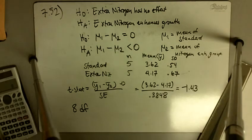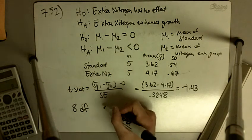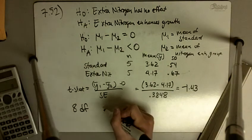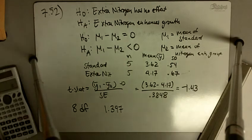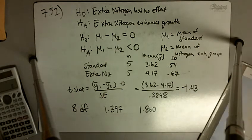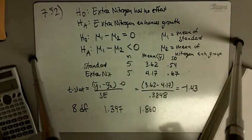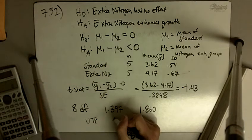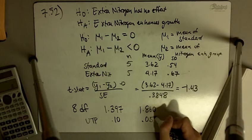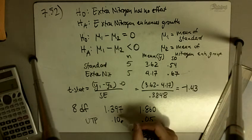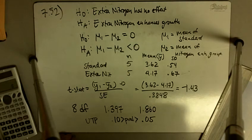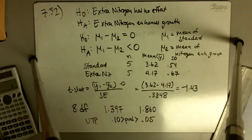We see that 8 degrees of freedom, negative 1.43, or basically now we have to look for the positive values, is in between 1.397 and 1.860. And 1.397 corresponds to an upper tail probability of 10%, and 1.860 corresponds to an upper tail probability of 5%. So our p-value is in between 10% and 5%.